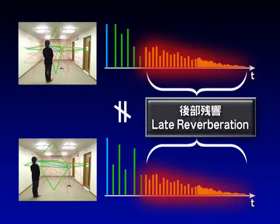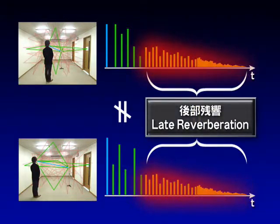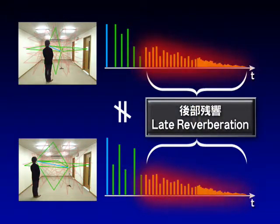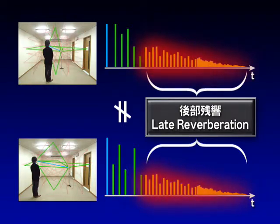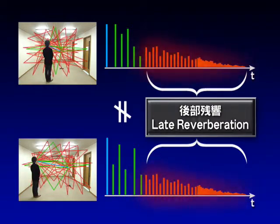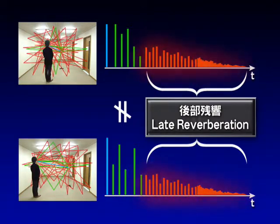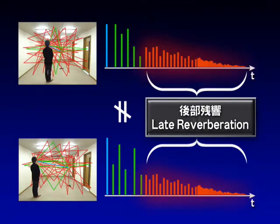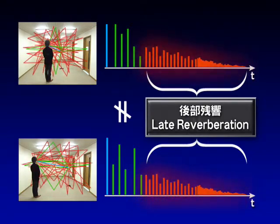As such, it is the late reverberation part that is most harmful to automatic speech recognition. So, if we suppress this part, we can achieve high automatic speech recognition performance without worrying about changes in position.